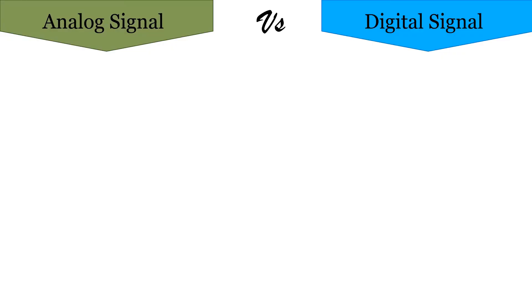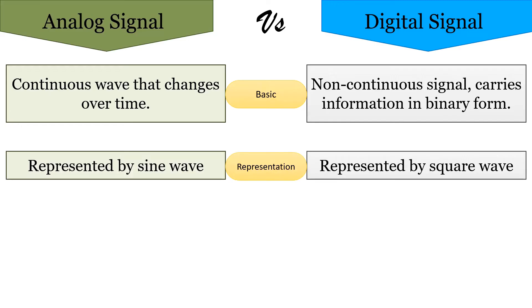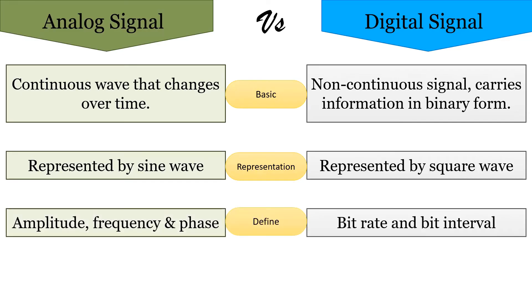Now let us discuss differences between analog and digital signals. Analog signal represents a continuous waveform that keeps changing over time. On the other hand, digital signal represents a non-continuous wave that carries information in binary format and has discrete values. Analog signal is always represented by continuous sine waves, whereas digital signal is represented by square waves. Analog signals are described using amplitude, frequency, and phase, whereas digital signals are described using bit rate and bit interval.